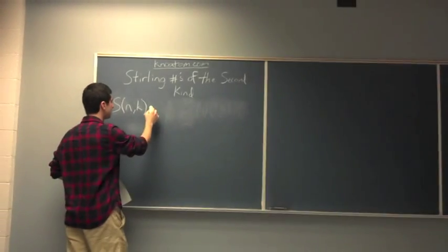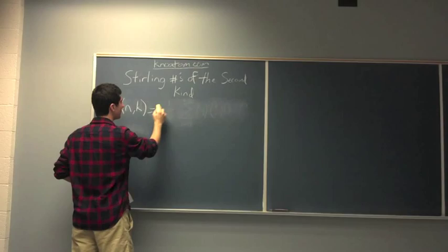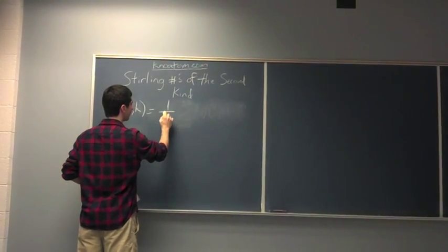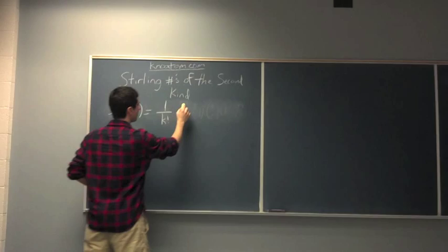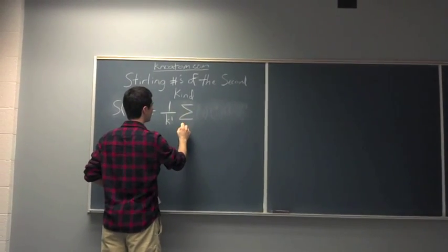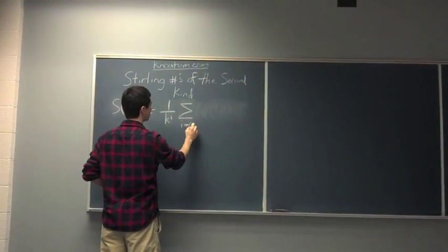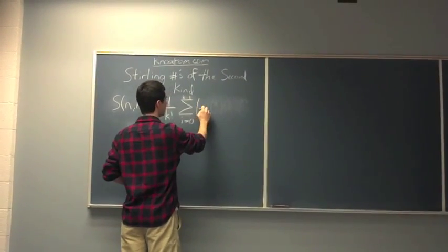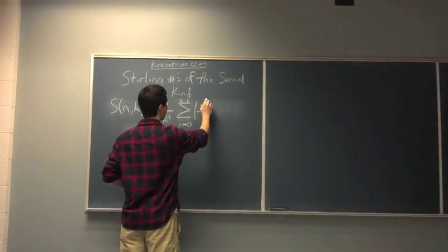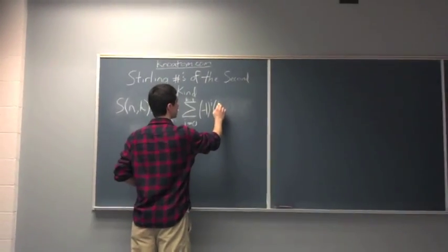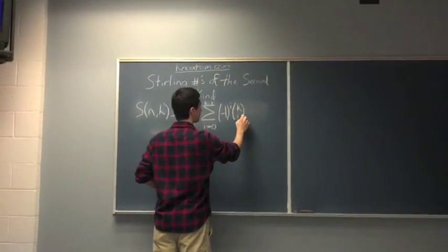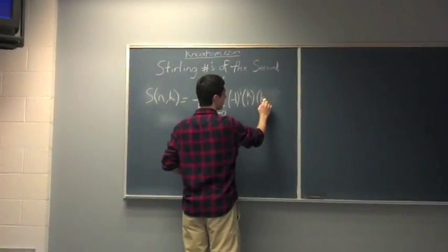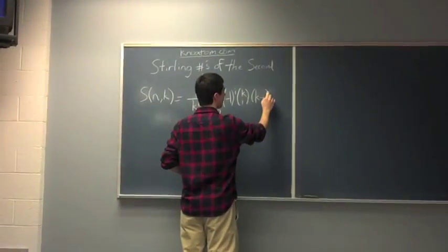The general formula we follow for this is 1 over k factorial times the summation from i equals 0 to k minus 1 of negative 1 raised to the i times k choose i times k minus i raised to the n.